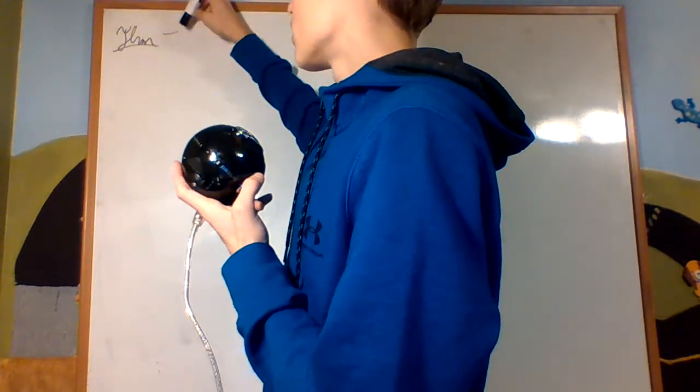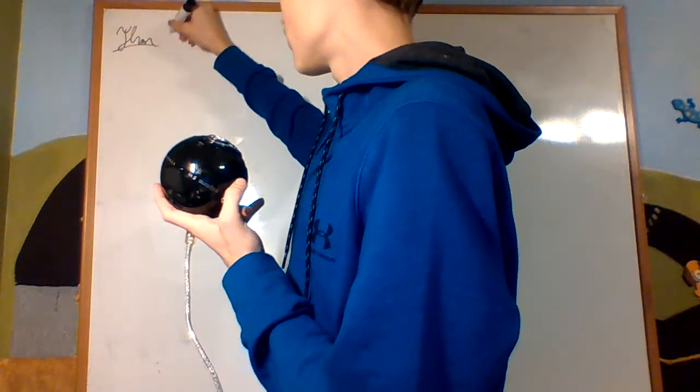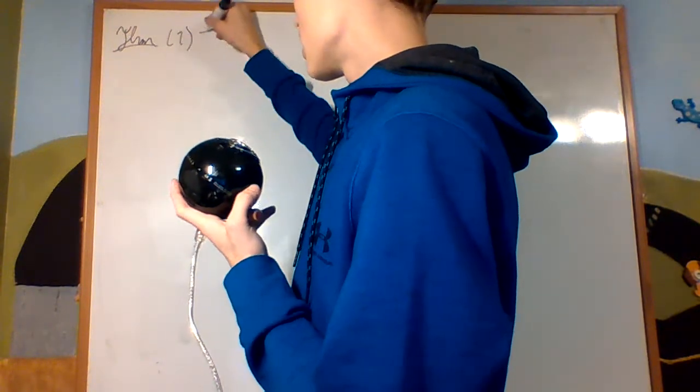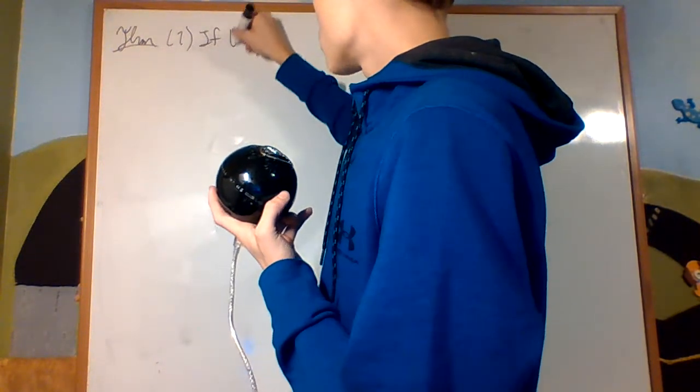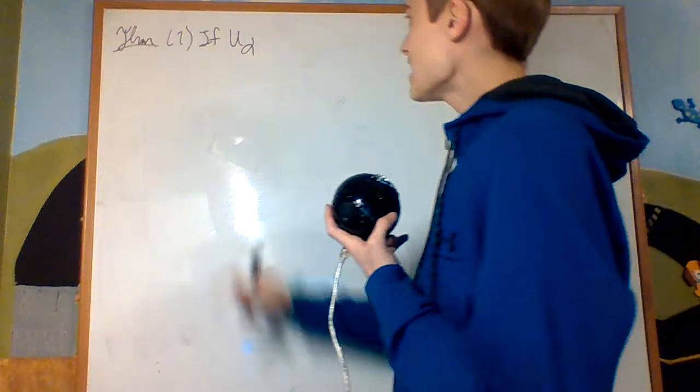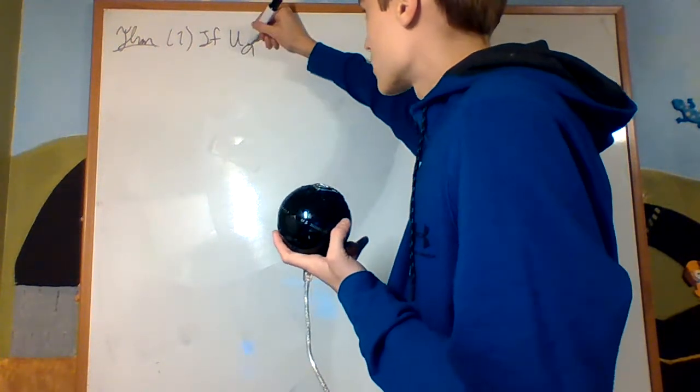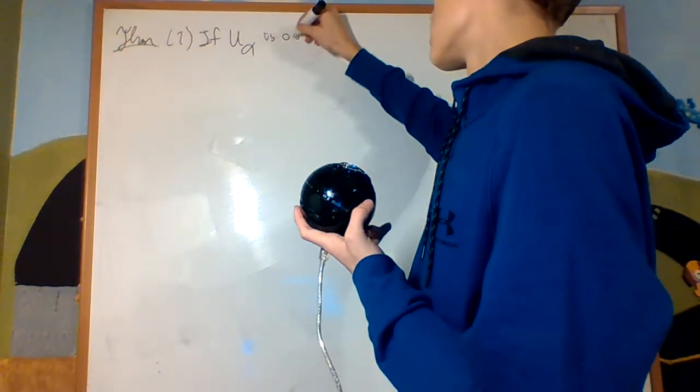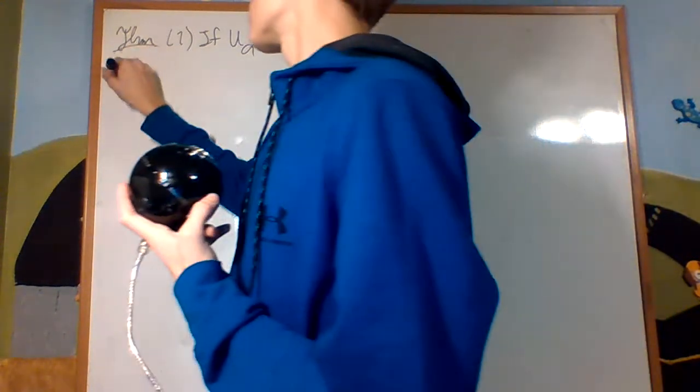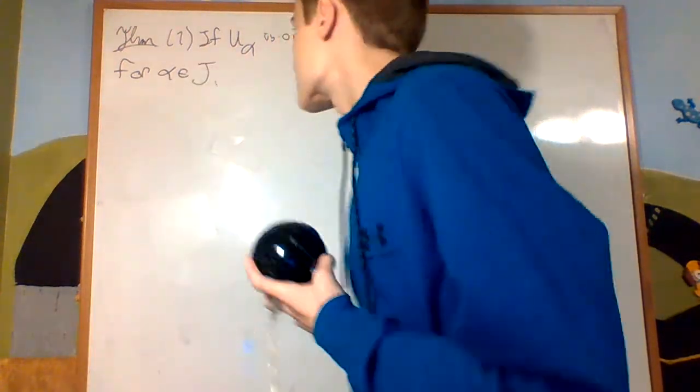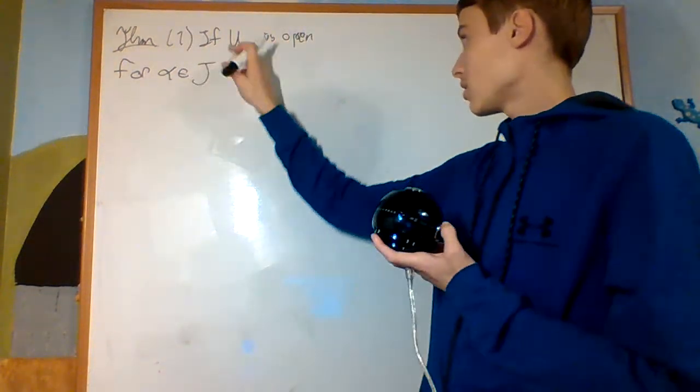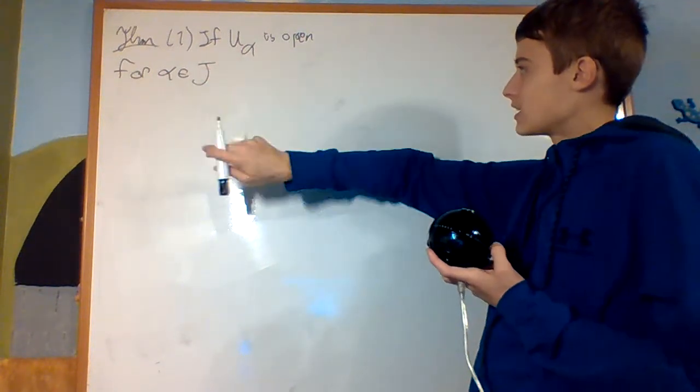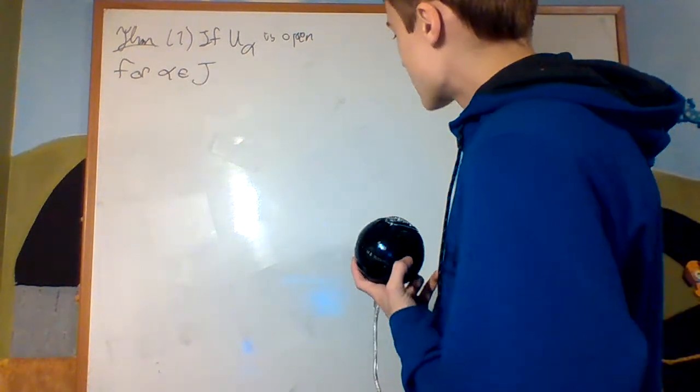So theorem one, first part of this theorem: if U_alpha is an indexed set of open sets, is open for alpha an element of an index set J. So U_alpha, alpha is an index here, so it's just indexing them. J is an index set.